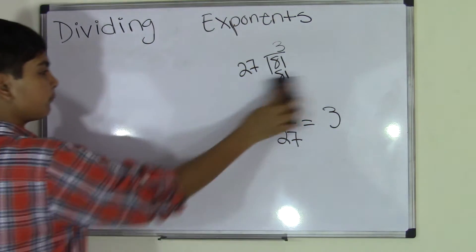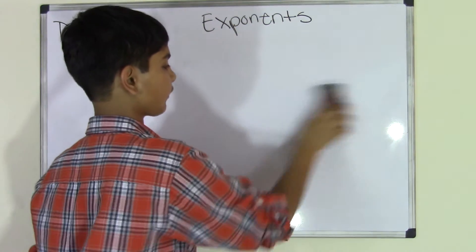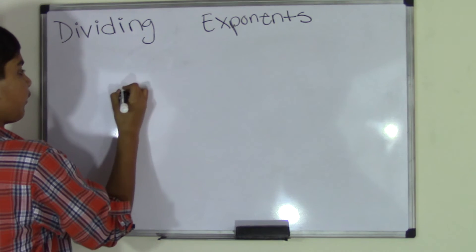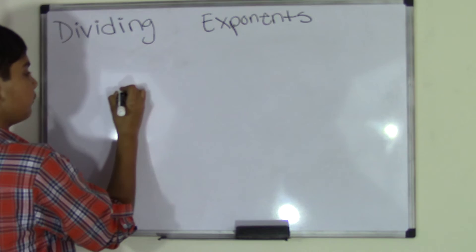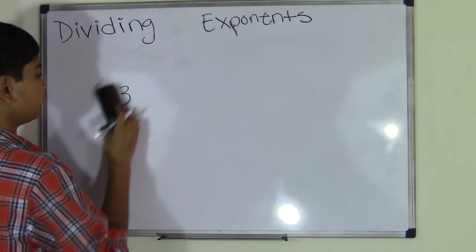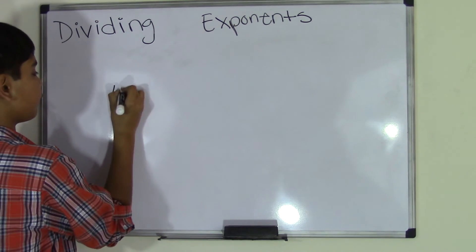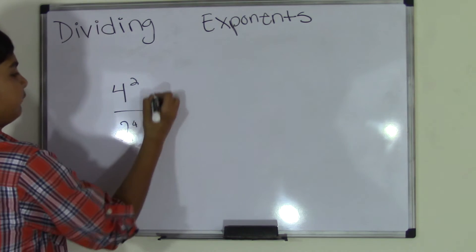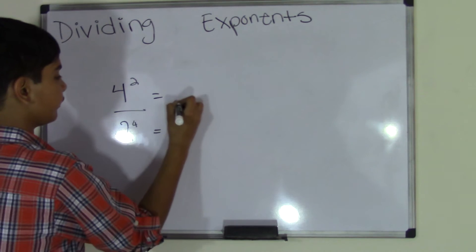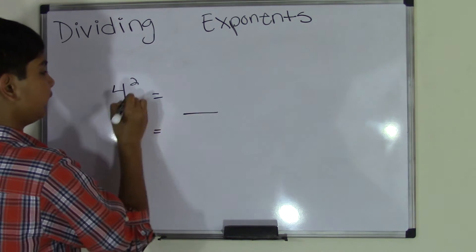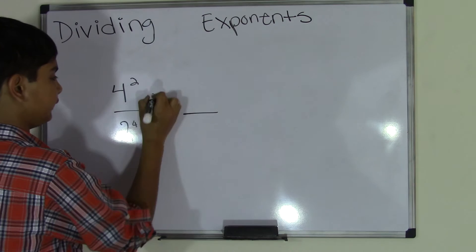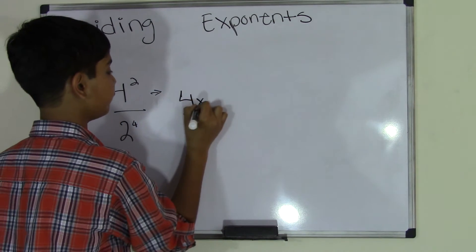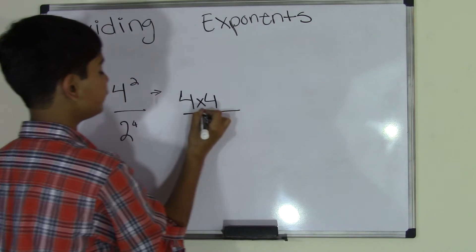Let's do another example. This time we have the numbers, actually let's do 4 to the power of 2 and 2 to the power of 4. Okay, so draw another line, make this into exponential form, I mean back into multiplication form. So we go 4 times 4 because 4 to the power of 2 is 4 times 4.